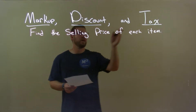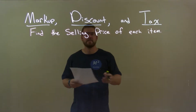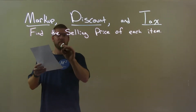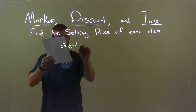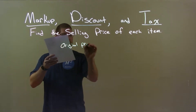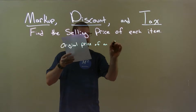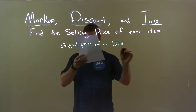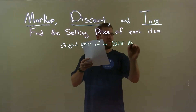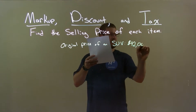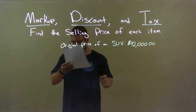We're going to find the selling price of each item. So, if I was given this item, the original price of an SUV is $42,000. I wonder what SUV it is.